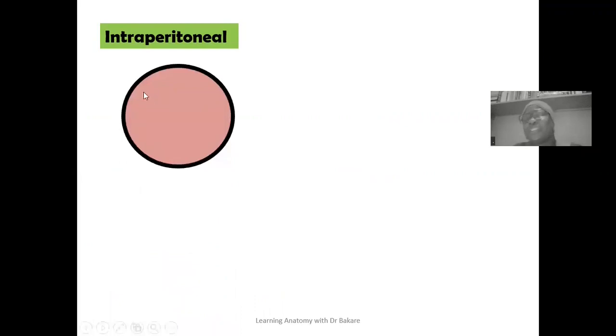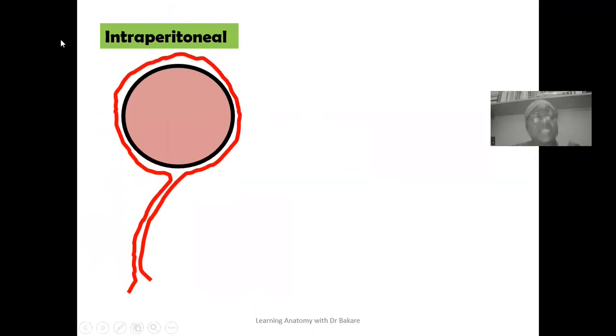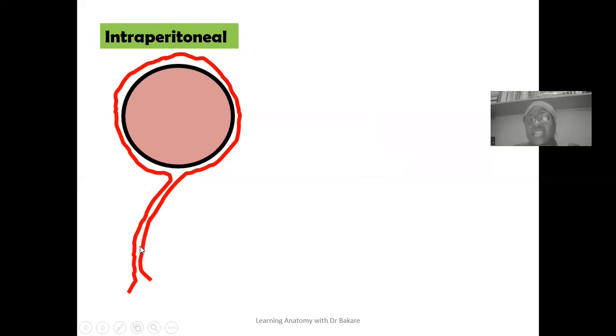Organs can either be of intraperitoneal presentation or retroperitoneal presentation. For intraperitoneal presentation, it means that the organ is embedded within the peritoneum. The peritoneum lines the entire surface of this organ, highlighted here in red. At the end, you have the emergence of the mesentery, which then connects this organ to the body wall, highlighted here in blue.